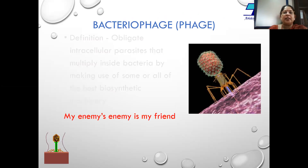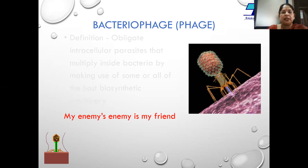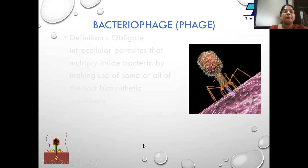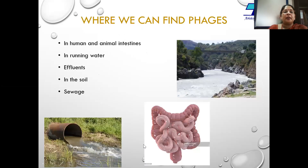A bacteriophage is a natural enemy to bacteria, and we are using this to control infections in shrimp aquaculture. Where do we find phages? Phages are found wherever there is bacteria — they are in the intestine, in running water, in soil, and in sewage. They are naturally present everywhere bacteria exist.